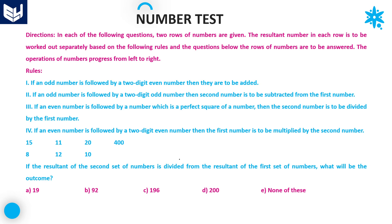Let's see the second question. Same rules, no change. First row: 15 and 11 — odd number followed by two-digit odd number. Rule 2: second is subtracted from first, so 15 minus 11 equals 4. Now 4 is even, followed by 20, a two-digit even number. Rule 4: both are multiplied — 4 into 20 equals 80.